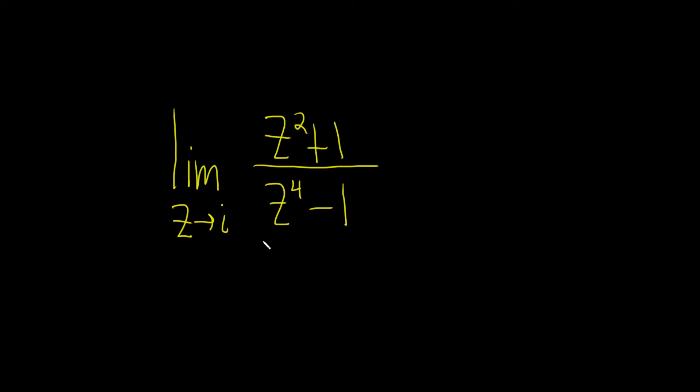In this problem we're going to find the limit of z squared plus 1 over z to the fourth minus 1 as z approaches i.